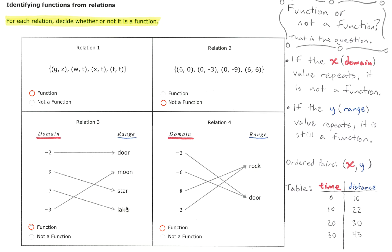In relation 4, how many arrows are coming out of negative 2? Only one arrow comes out of negative 2, pointing at door. Only one arrow comes out of negative 6, pointing at door.